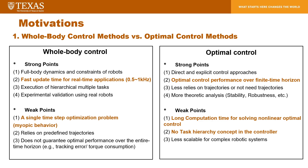On the other hand, generic optimal control can consider a finite time horizon to obtain the optimal solution. In addition, we do not need reference trajectories in many cases. However, it takes a very long time to solve the optimal control problem. In particular, it is extremely hard to solve nonlinear optimal control problems for large-scale systems such as humanoid robots.